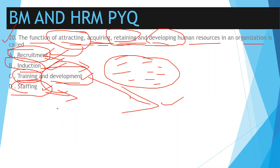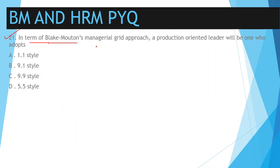Question number 21: in terms of Blake and Mouton — sometimes questions ask who gave the managerial grid approach. The answer is Blake and Mouton gave this concept. The question asks: a production-oriented leader will be one who adopts which style? The answer is the nine-to-nine style.